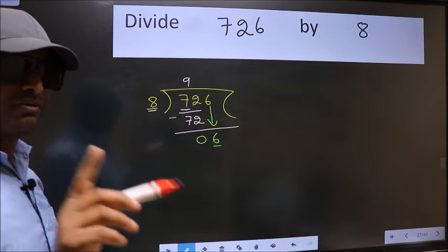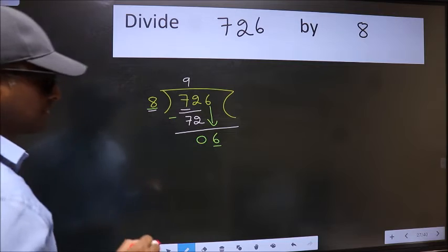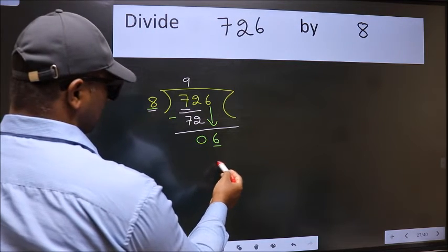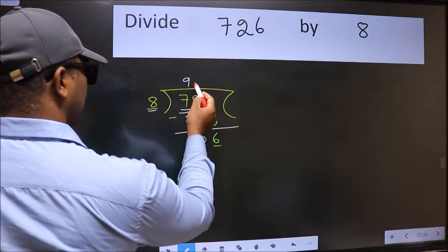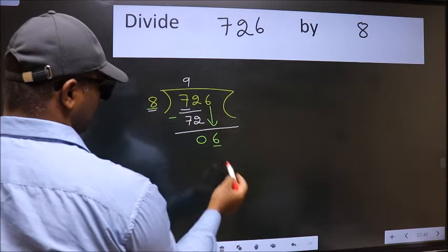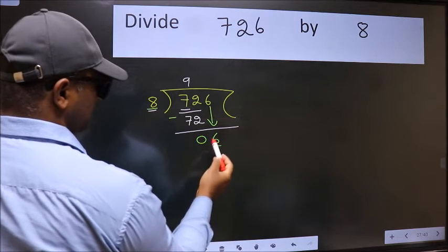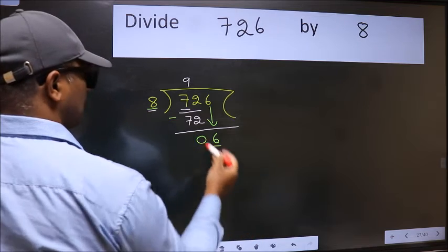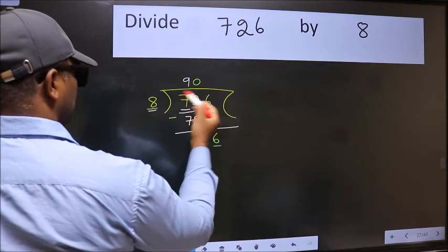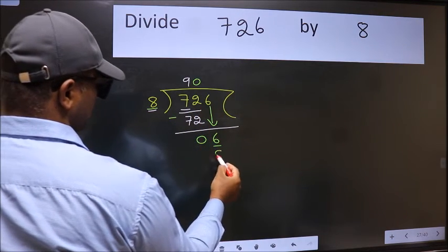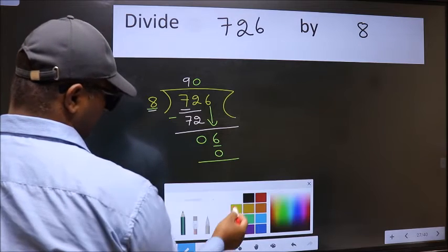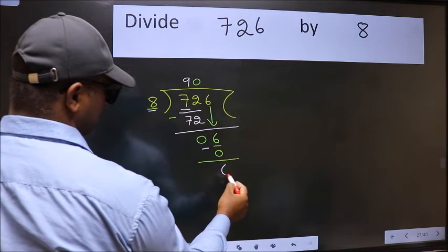Instead of that, what we should think of doing is which number should we take here? If I take 1, we will get 8, but 8 is larger than 6. So what we do is we take 0. 8 into 0 is 0. Now we subtract. We get 6.